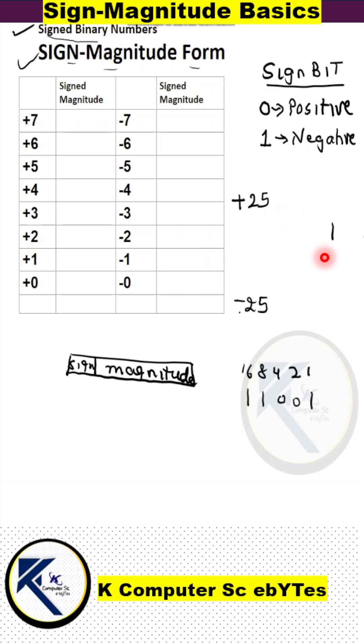So we will write 8-bit representation. The first 7 bits will form the magnitude part and the last bit, that is the leftmost bit or the most significant bit in this case, will be 0 as it is representing the number plus 25.